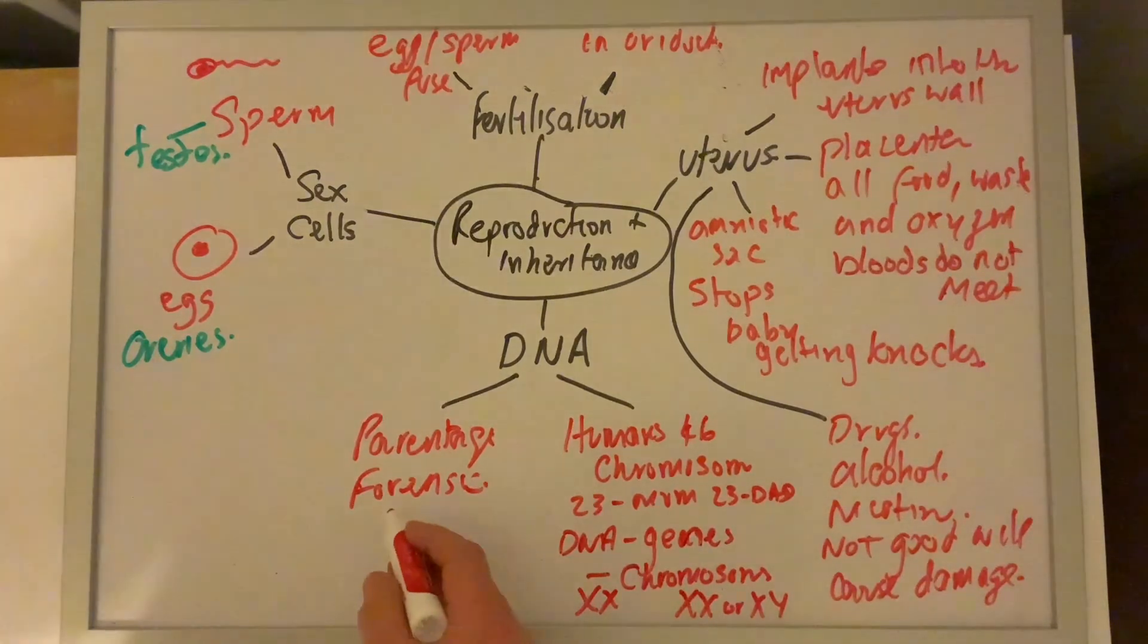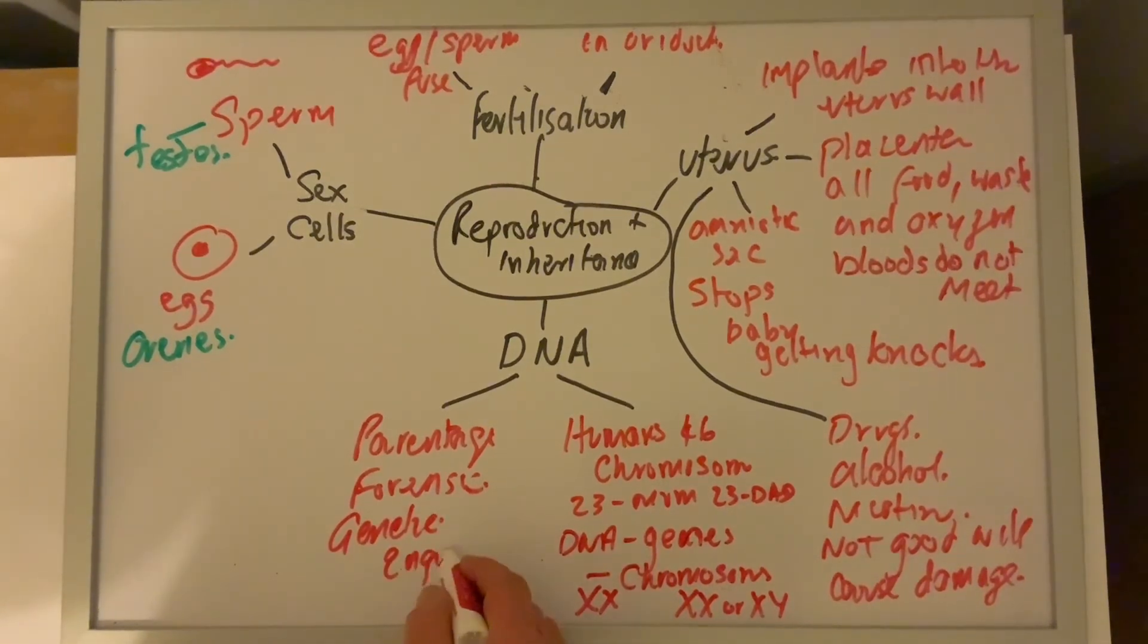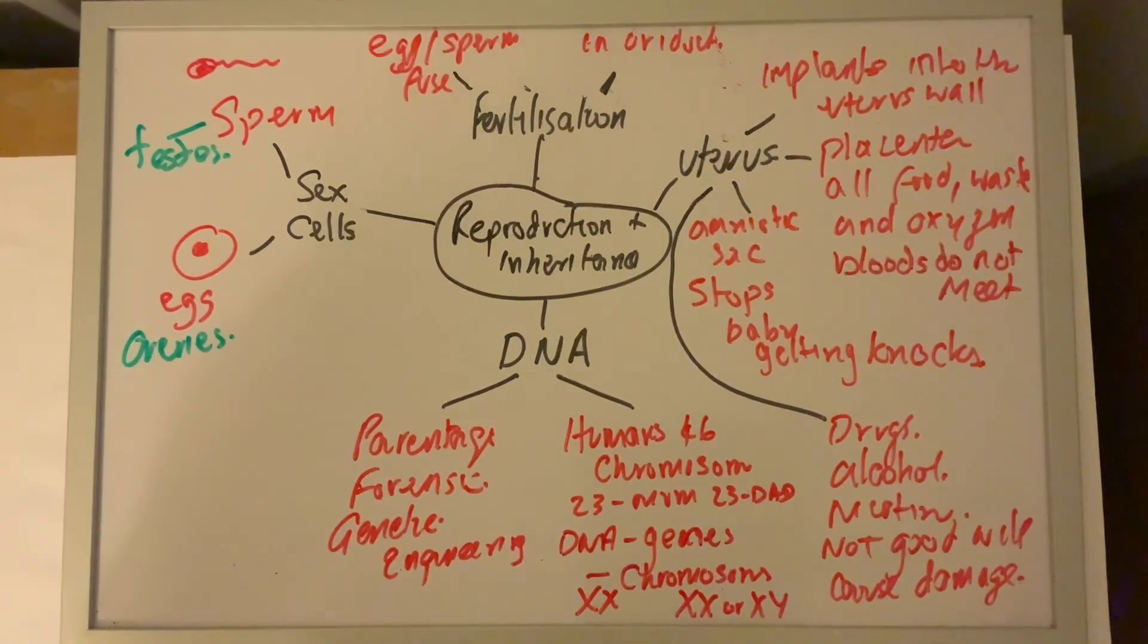You've got things like genetic engineering whereby people's genes can be altered while they're still basically in the womb and maybe diseases lost that they would have suffered from. You've also got to think of problems with all this because it could also be abused.